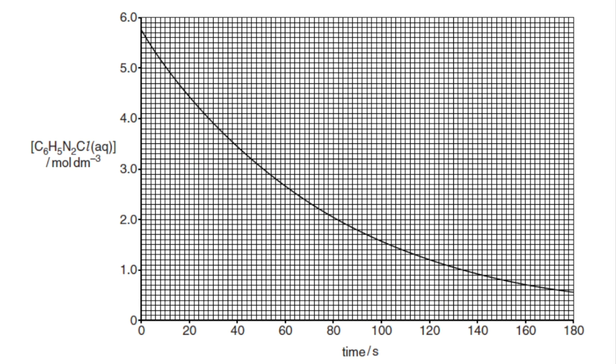So it's the same graph but I've just enlarged it a little bit. So how can you work out the order from this concentration-time graph? Well you measure the half-life.